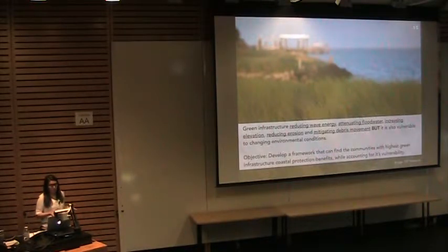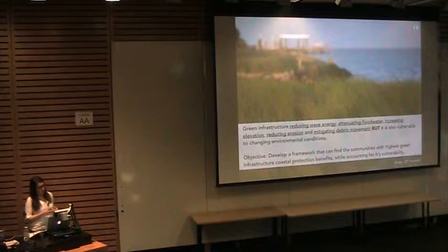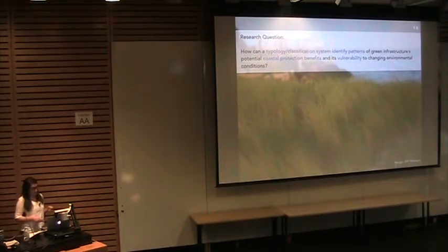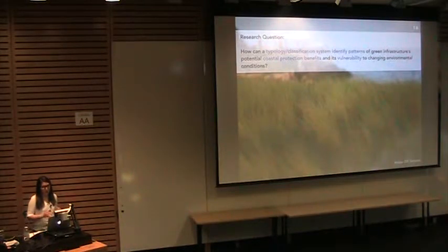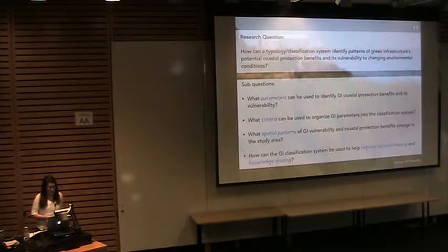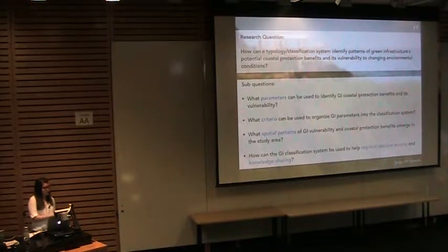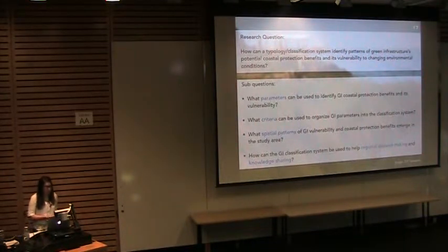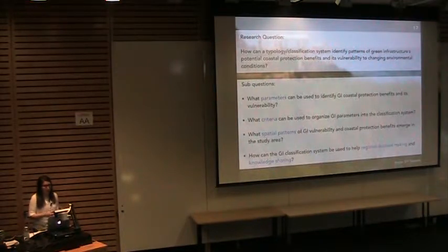That is why my objective in this research is to develop a framework that can identify communities with the highest green infrastructure coastal protection benefits while also accounting for its vulnerability. The main research question I ask is: how can a typology or classification system identify patterns of green infrastructure potential coastal protection benefits as well as its vulnerability to changing environmental conditions? Sub-questions include: what parameters can be used to identify green infrastructure coastal protection benefits and vulnerability? What criteria can be used to organize these components in a meaningful classification system? What spatial patterns can emerge, and how can this system be used to help with regional decision-making and knowledge sharing?